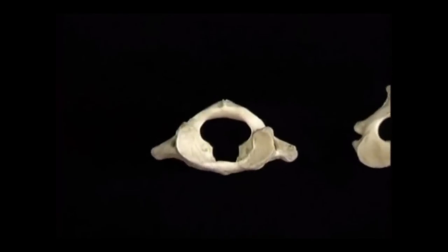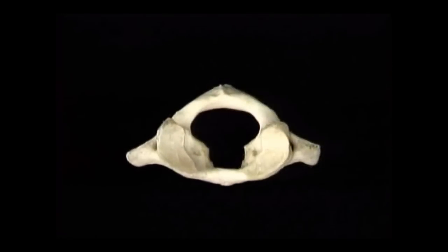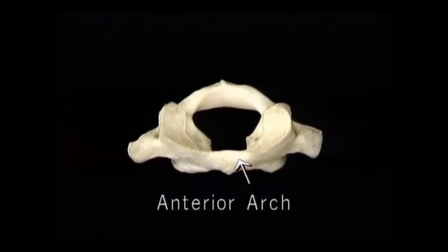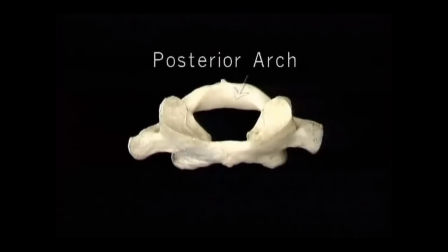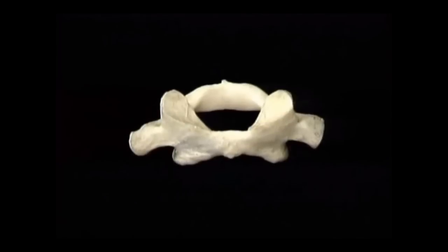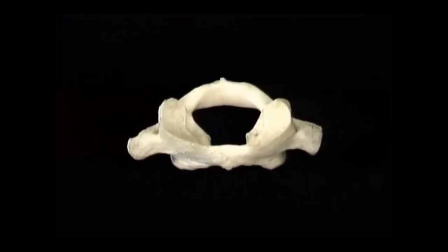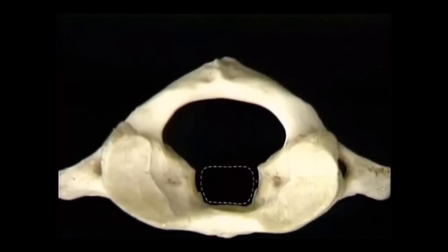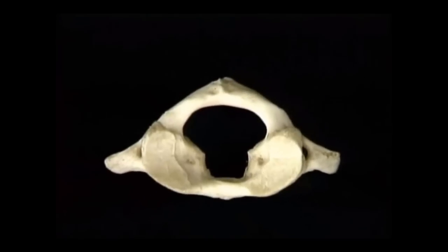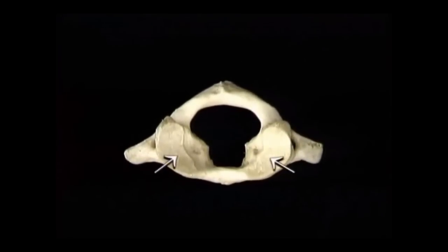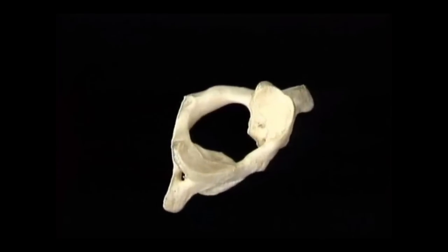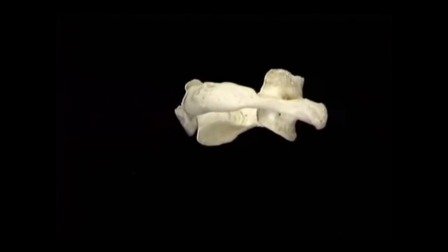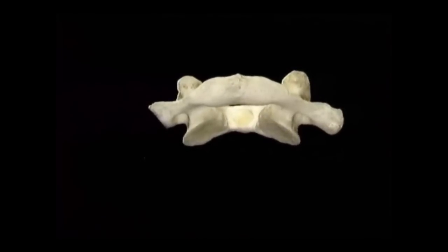Now let's look at ways in which the atlas and the axis are different. The atlas vertebra doesn't have a body. In front it just has this narrow anterior arch which matches the posterior arch. The two arches of the atlas together with these two lateral masses enclose an unusually large vertebral foramen. This part is occupied by the spinal cord, and this part by the odontoid process of the axis. The upper articular surfaces of the atlas are shaped like parts of the inside of a cup to match the shape of the occipital condyles. The lower articular surfaces of the atlas are shaped like parts of the inside of a cone.